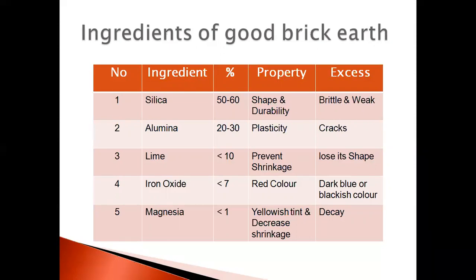The next ingredient is iron oxide — it should be less than 7%. Iron oxide gives the brick its red color. If you use greater than 7%, burning the bricks changes their color to dark blue or blackish. The final ingredient is magnesia, which should be less than 1%. It imparts a little yellow tinge and decreases the shrinkage of the brick.